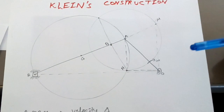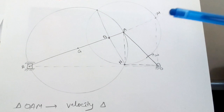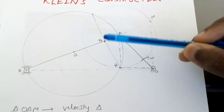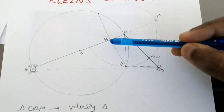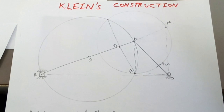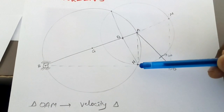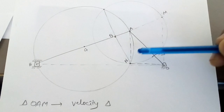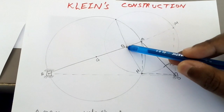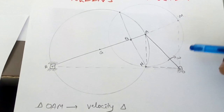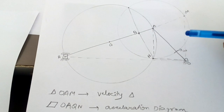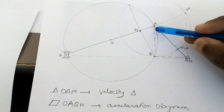AM is the radius. You draw another circle, and wherever these two circles intersect, they meet at two points. One is point N and the other intersection gives point Q on the connecting rod. You join these two points. So you obtain two points: Q on the connecting rod and N as the lower intersection point. Now join O, N, NQ, and AN. The velocity triangle is O-A-M and the acceleration diagram is O-A-Q-N.